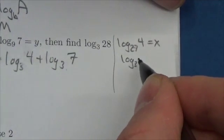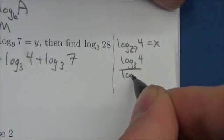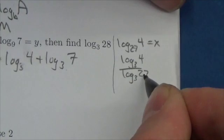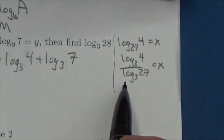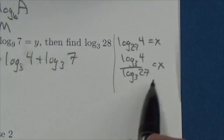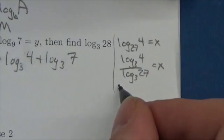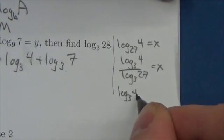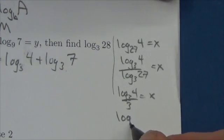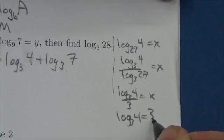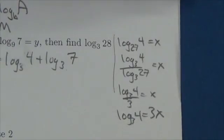So this is going to become the log base 3 of 4 over the log base 3 of 27 equals x. Well, the log base 3 of 27 is 3. So this is log base 3 of 4 over 3 equals x. In other words, the log base 3 of 4 equals 3x. Perfect.